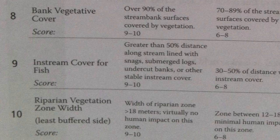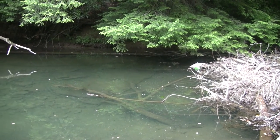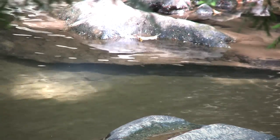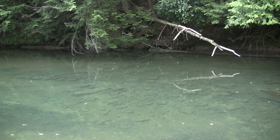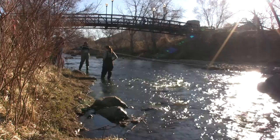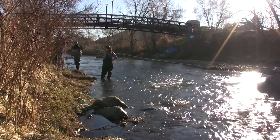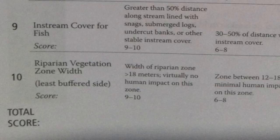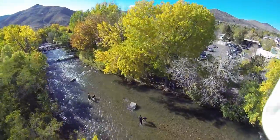The ninth parameter is in-stream cover for fish. Trout generally like to hang out in pools, especially if they are protected. They don't like to be seen from above by creatures like eagles, so trout like to hide under hanging rocks, log jams, leaf packs, or tree limbs hanging out close over the water's surface. Look at the edges of the stream only and estimate what percentage of these side waters have suitable cover for trout. The last parameter is riparian vegetation zone width — riparian means stream side. We look to the average width of vegetated bank from stream side to first human interference. Sidewalks count as human interference.